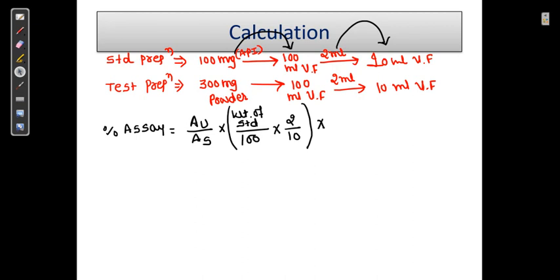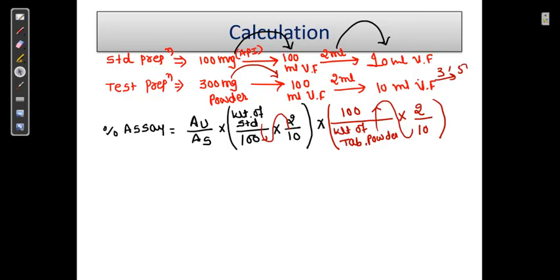Now for the test, we have taken weight of tablet powder into the 100 ml volumetric flask. This is in inverse form - this is flowing in these directions, this way and this way. From that we have taken 2 and transferred to the 10 ml. If here further we have taken 3 into 50 ml, this would be 10 into 2.